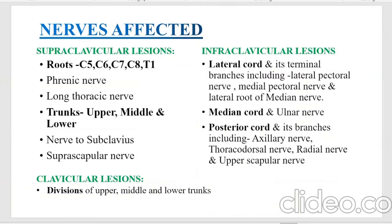We will discuss which nerves are affected in which type of lesion. In supraclavicular lesion, roots of C5 to T1 nerves are affected. Divisions of the upper, middle, and lower trunk are affected. In infraclavicular lesion, the lateral, medial, and posterior cords of the nerves are affected.